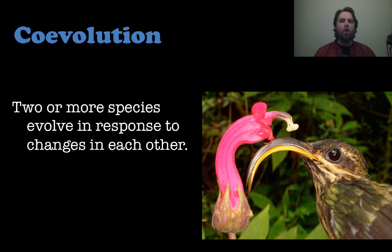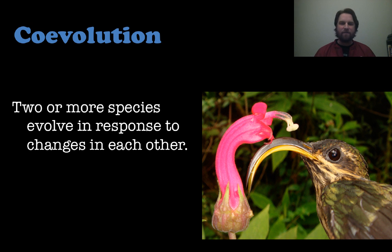The next pattern is co-evolution — that's when two or more species evolve in response to one another. This can happen in mutualistic relationships, but also in competitive relationships. For example, a bird evolved a beak that could drink out of a particular shaped flower, so species evolve in direct response to one another.